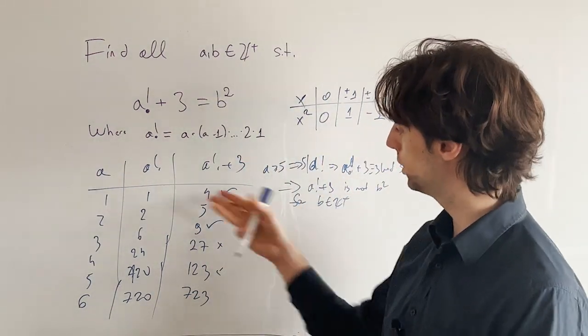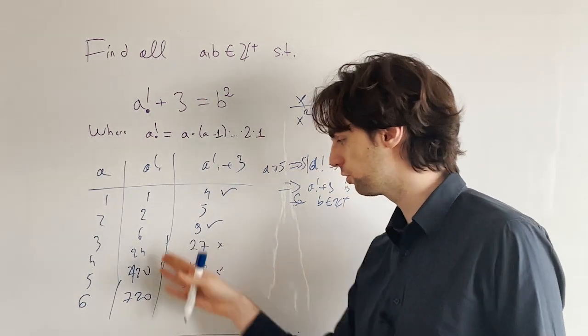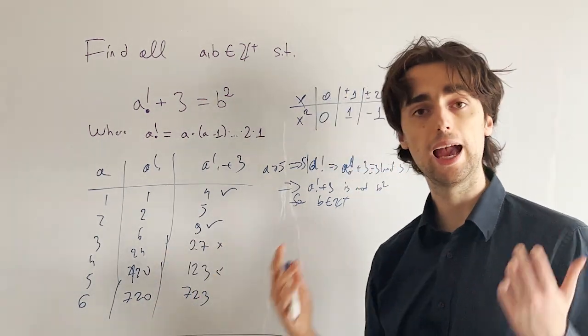And here what we've done is we notice, oh wait, the squares are not going to appear, modulo 5, and so we are done.